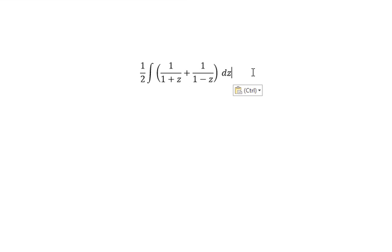And now we can get the final answer. The integral of 1 over 1 plus z, we got about ln, that's about natural log, and we have absolute value of 1 plus z. Because we have a negative next to the z, so we have negative ln 1 minus z.